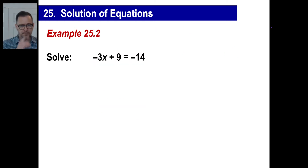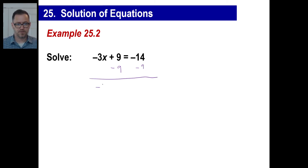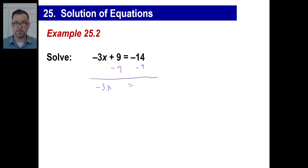Let's try another one — pause and copy. We are going to do addition and subtraction first to get rid of that 9 sitting next to the negative 3x. We want negative 9 here to get rid of it. Since this is an equation, we put negative 9 over to the right side as well. Negative 3x is staying there. Now I have negative 14 minus 9.